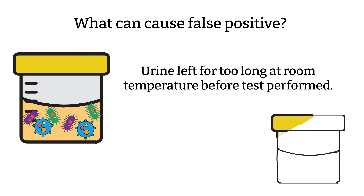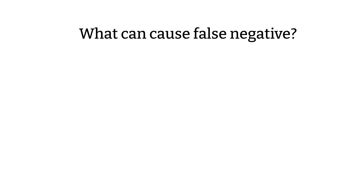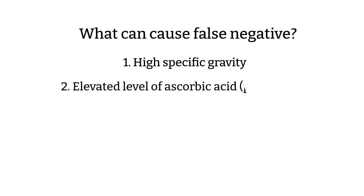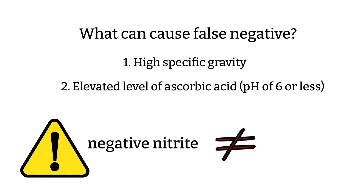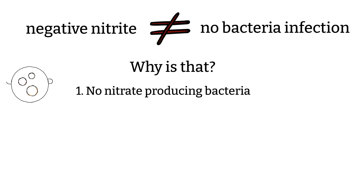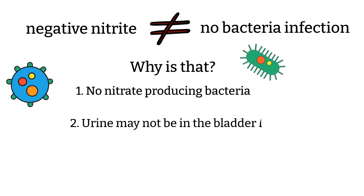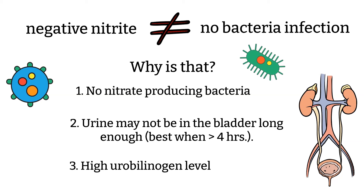A red urine can also give a false positive test result. For false negative test results, high specific gravity and a high level of ascorbic acid can give false negative results. There are some facts to be cautious about when interpreting nitrite test results — a negative result should not be interpreted as no bacterial infection. Here are some reasons: first, there are many bacteria that produce nitrite, but there are also many bacteria that do not. Second, urine may not remain in the bladder long enough before specimen collection; urine that remains in the bladder for four hours or more is the better specimen. Also keep in mind that this dipstick is not a replacement for bacterial microscopy, which will be discussed in the next video.